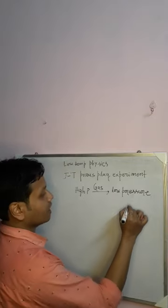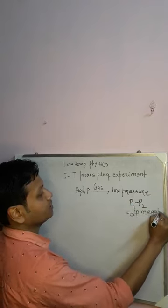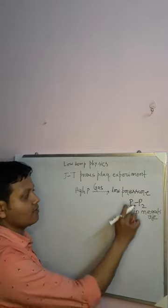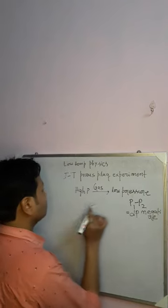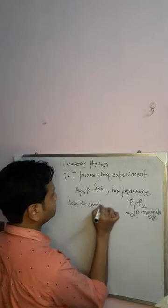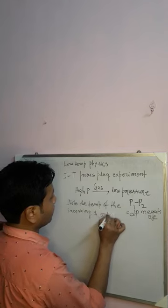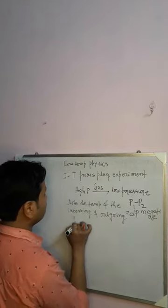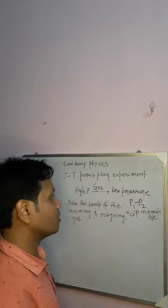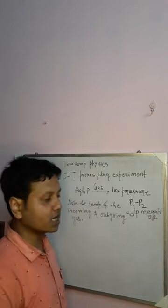The initial pressure is high, say p1, and the final pressure is low, so the change dp is negative — remember, dp is negative. Since the initial pressure is high and the final pressure is low, the change in pressure dp is always negative. We have to note the temperature of the incoming and outgoing gas. You will find the diagram in various books. Our main purpose is to pass a gas through a huge pressure difference and record the temperature of the incoming and outgoing gas.